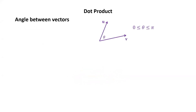Now let's discuss the angle between vectors. When talking about the angle between vectors, we always mean the smaller angle. The angle theta between vectors u and v is always between 0 and π (0 and 180 degrees). The key theorem is that the dot product u·v equals the length of u times the length of v times cosine(θ), where θ is the angle between them.